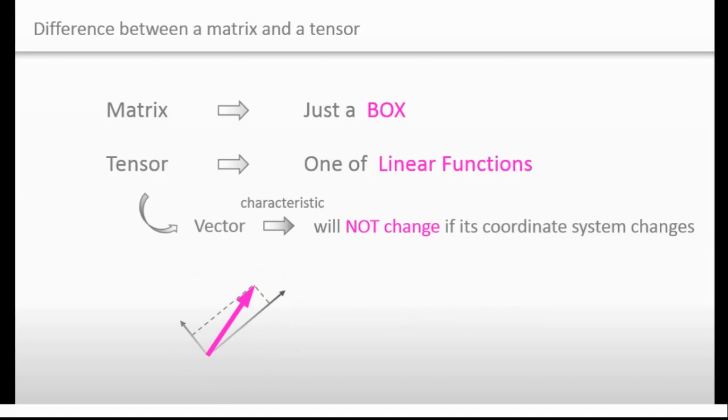I mean, the length of the vector doesn't change. The direction of the vector doesn't change either. This is an important characteristic of a vector, and we must keep this in our mind if we think about tensors.